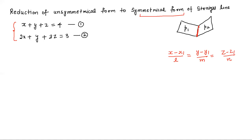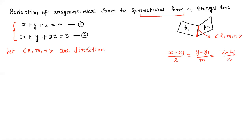This is the straight line — the intersecting line of the given two planes. Let L, M, N be the direction ratios of the required straight line.